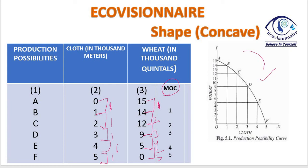So the simple reason why PPC is concave is due to increasing Marginal Opportunity Cost (MOC). Why does this marginal opportunity cost increase? Because one resource is not equally efficient in producing both commodities. When you take resources away from wheat that are very good at producing wheat, they are not as good at producing cloth — so you have to sacrifice more to produce the same quantity. That is why the shape is concave to the origin. These are the two features to remember: downward sloping and concave to the origin.